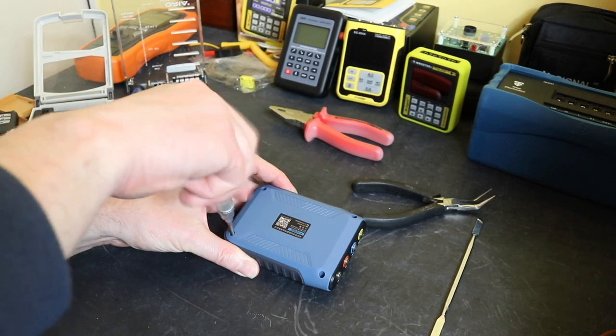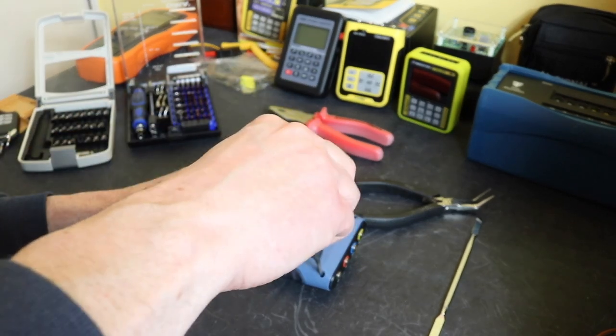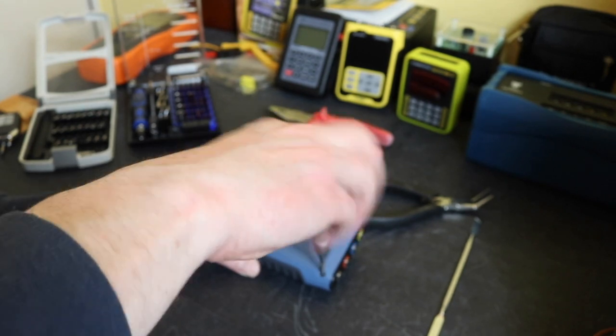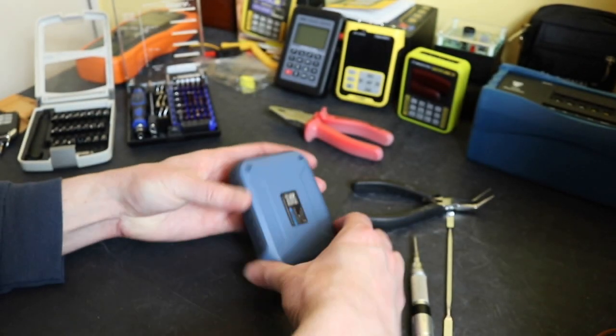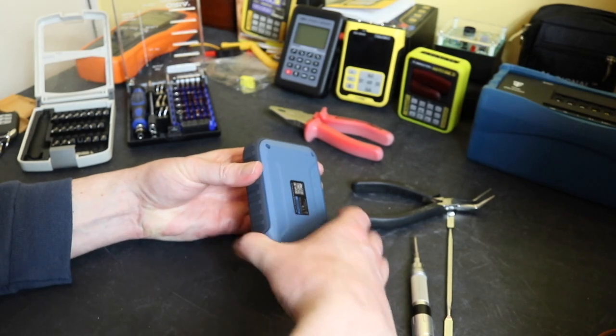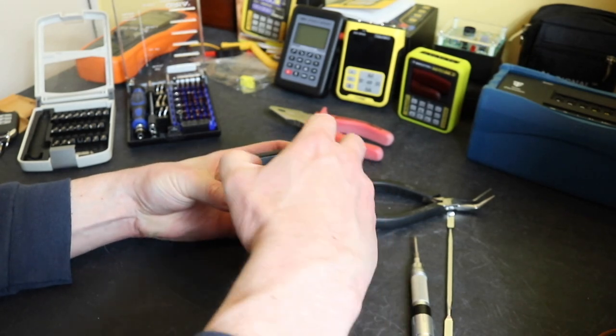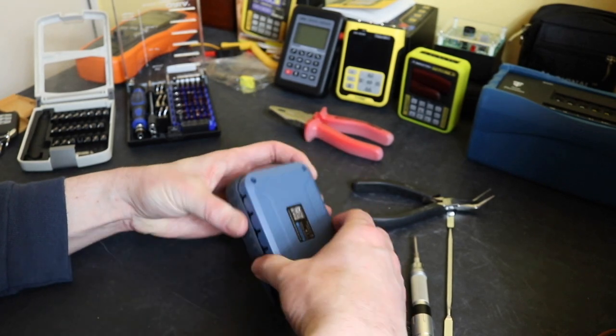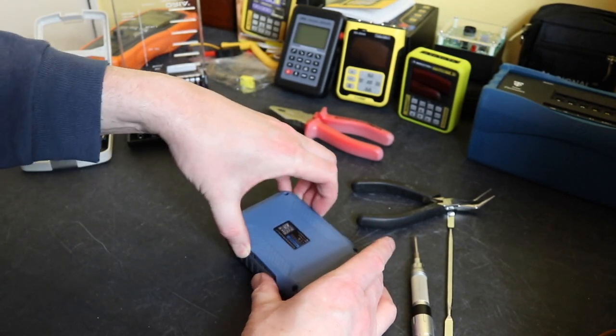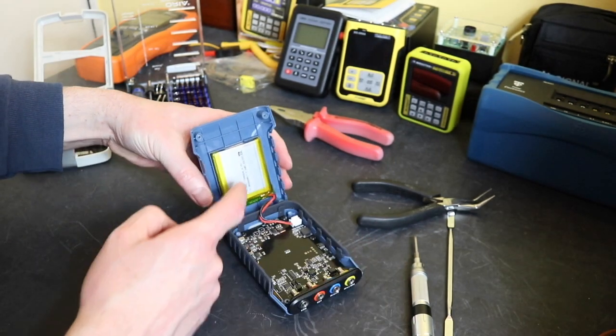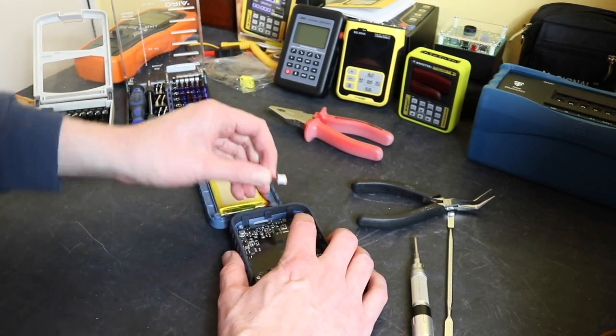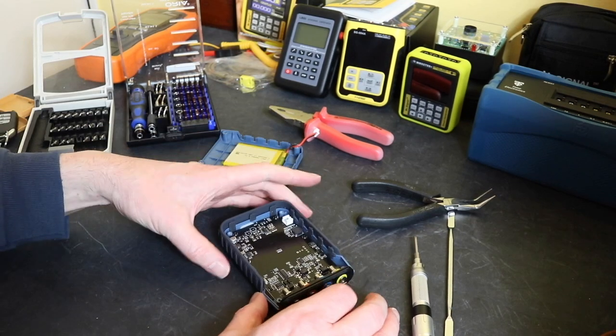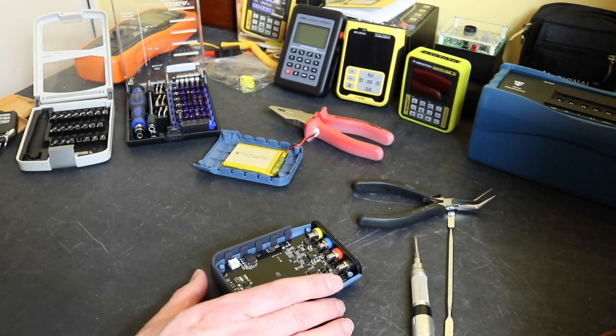Now there's just four screws in the corner of these units to remove. Then the battery pack is glued onto the back of the case with double-sided tape I think, so you can unplug and remove it out the way and then we are inside.